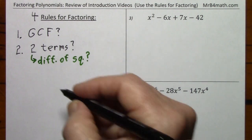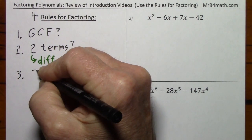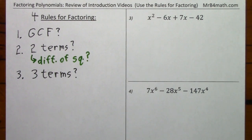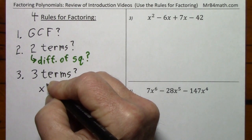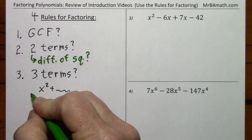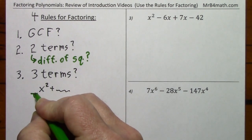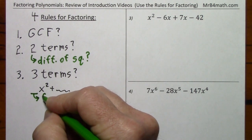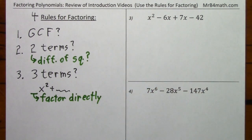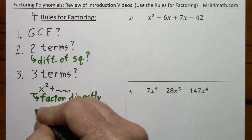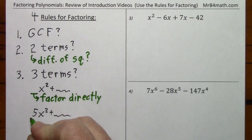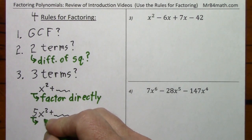If you don't have two terms, number three: do you have three terms? There are basically two possibilities. You could have a leading coefficient of one — if nothing's written — and in that case you can factor directly. Or you could have a leading coefficient other than one, let's say a five, and in this case we've been using factor by grouping.